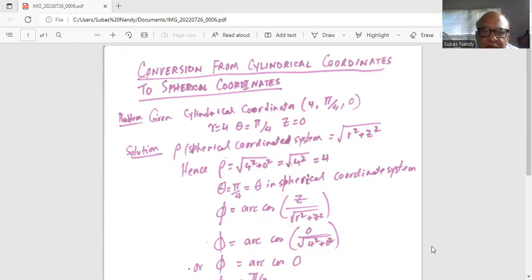Rho in spherical coordinate system is equal to square root of r square plus z square. In this case, rho is equal to square root of 4 square plus 0 square, which is square root of 4 square is equal to 4.